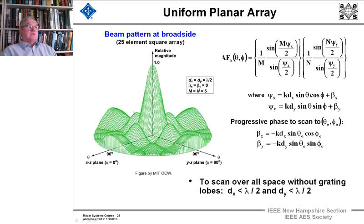And here's what this looks like when you build a pretty graph of it. It's a 25-element square array, and the beam is pointing at broadside with lambda over 2 spacing, and there's no phase shifting from element to element, and the number of elements is 5 in each of the two Cartesian directions in the x and y plane.